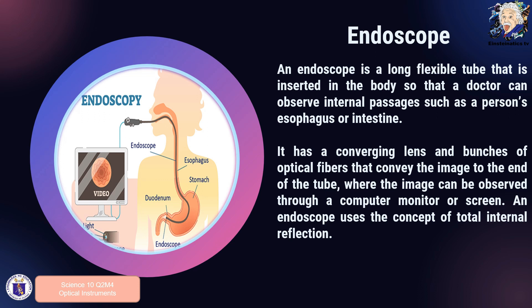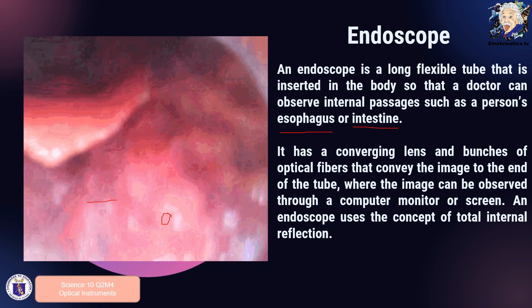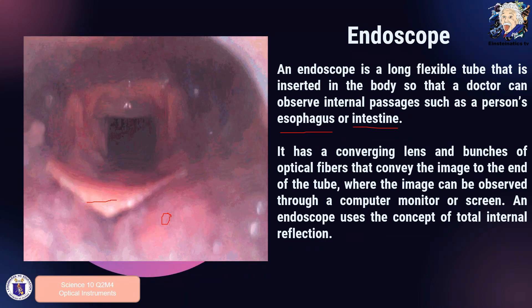The next optical instrument is the endoscope. From 'endo' meaning inside, it is a camera consisting of a long flexible tube inserted into the body so a doctor can observe internal passages such as a person's esophagus or intestine. It has converging lenses and bunches of optical fibers that convey the image to the end of the tube. The endoscope is usually connected to a video feed viewed on a computer monitor or screen, and it uses the concept of total internal reflection. Here is a quick view of a video taken using an endoscope showing a human esophagus.